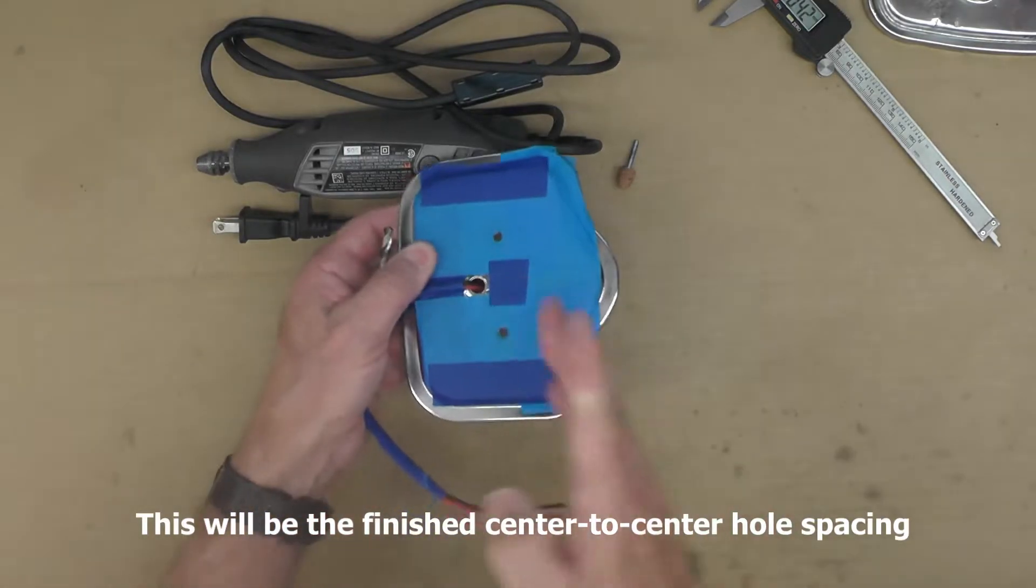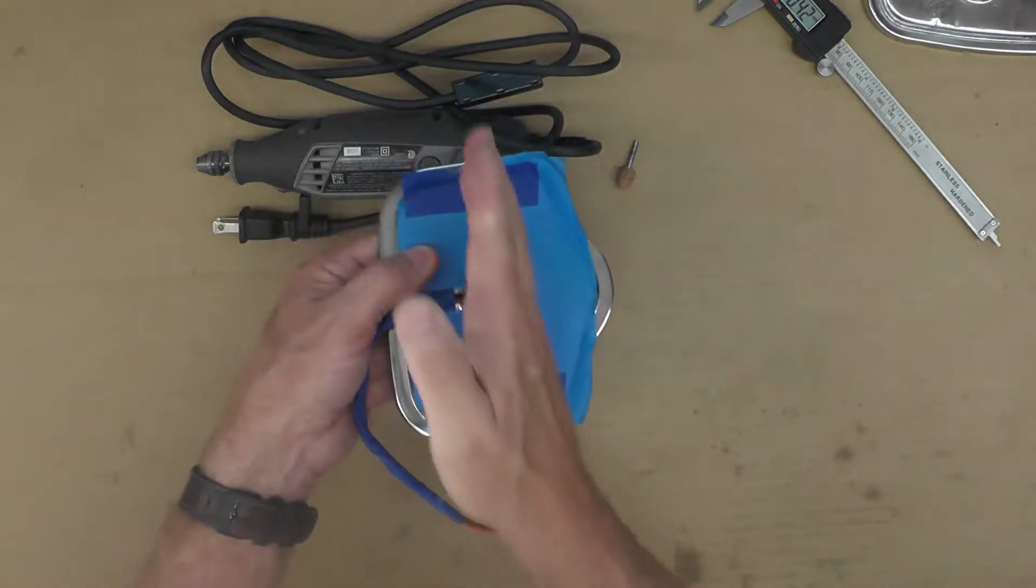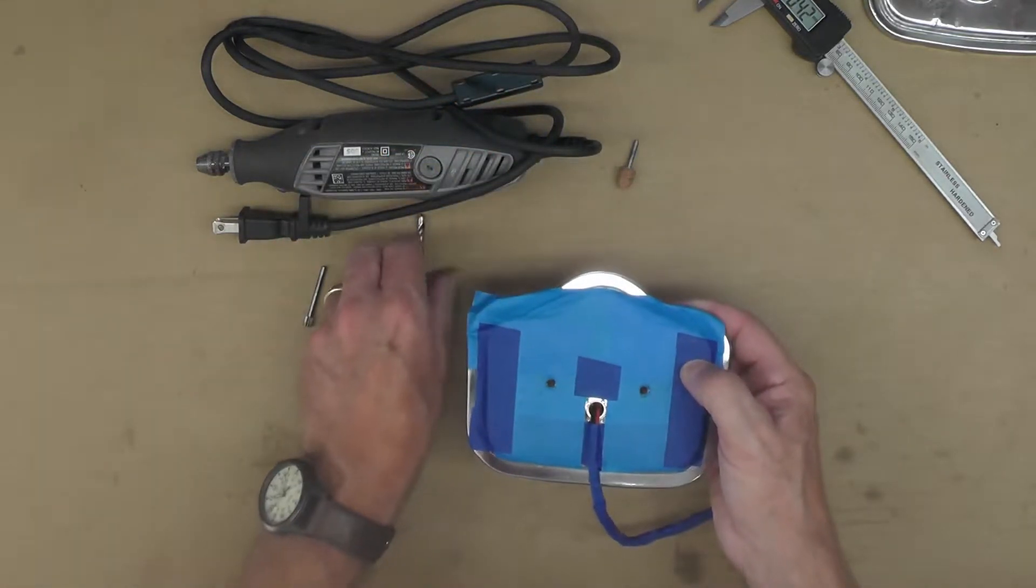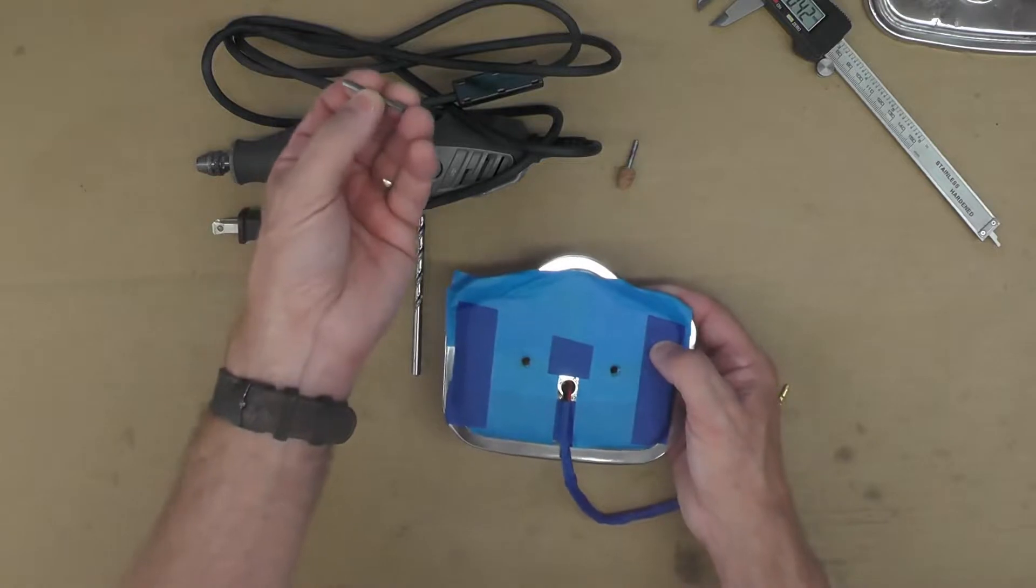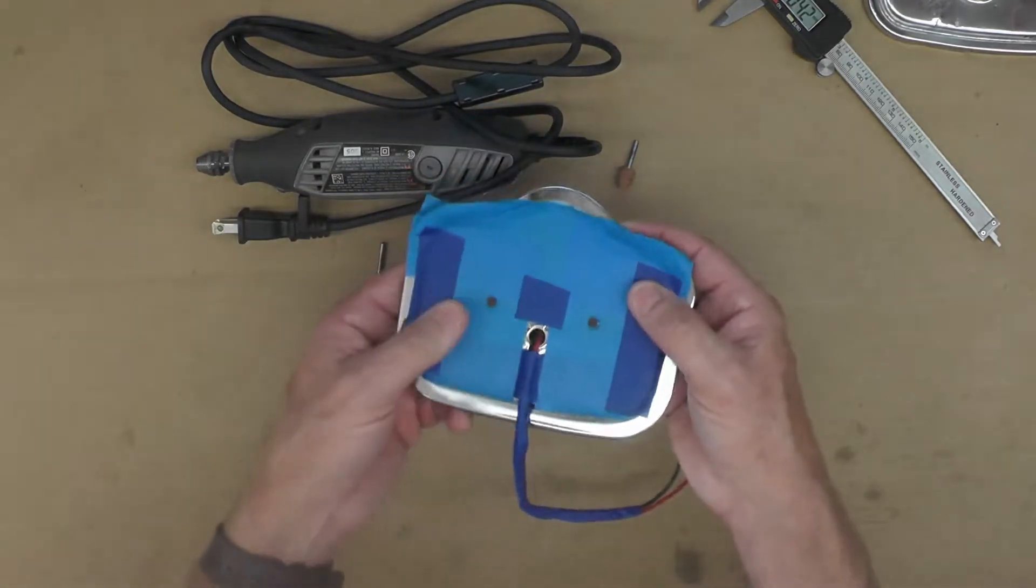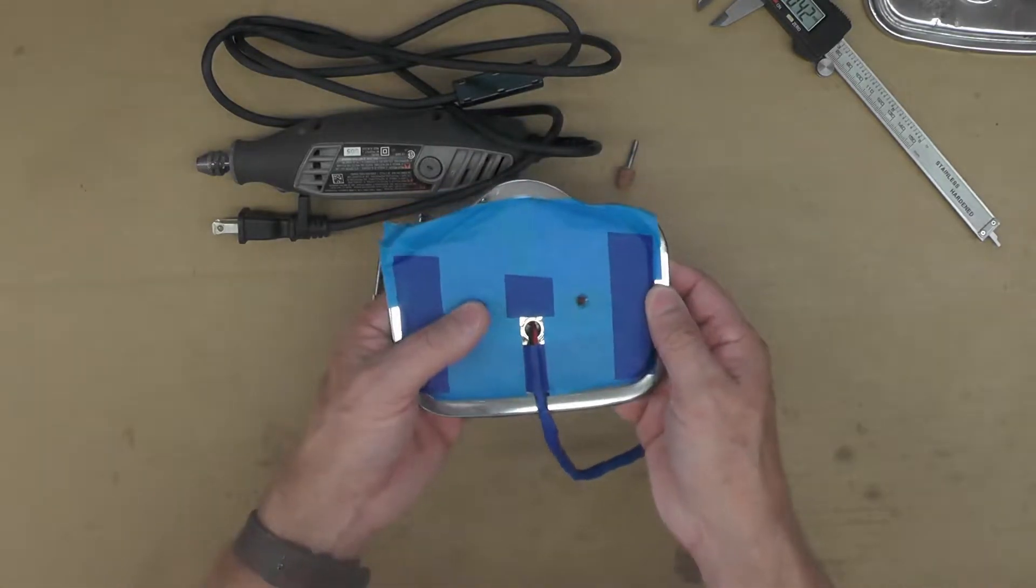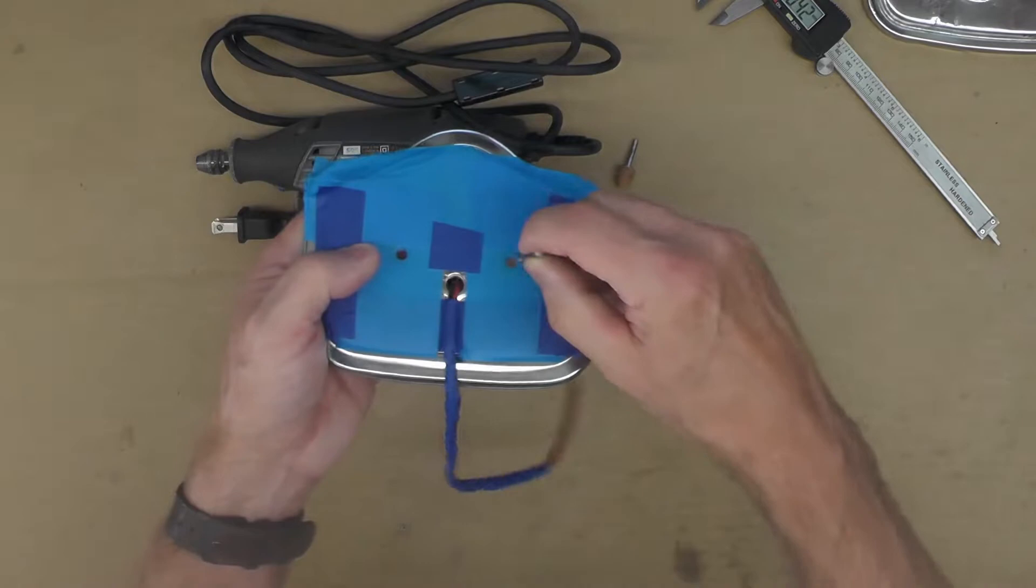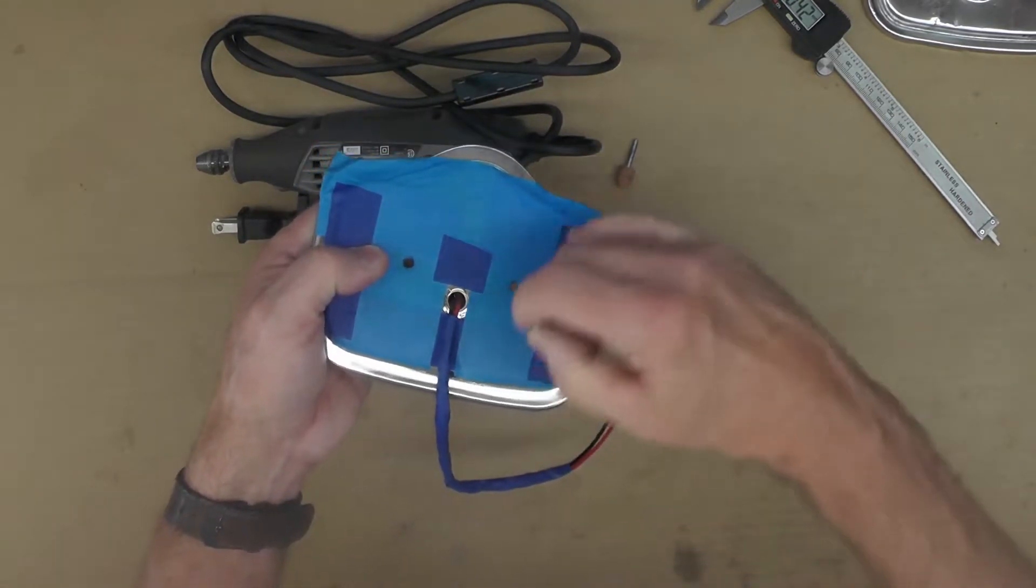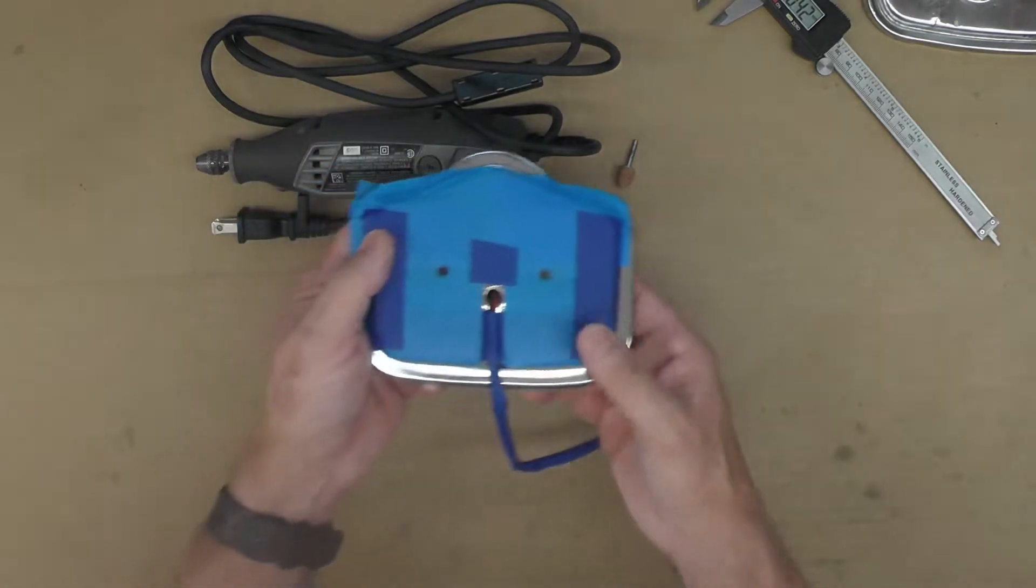And I will scribe like this and like this. That will give me my outbound distance here. Then I will eyeball the center here just for general purposes when I'm using the Dremel with the milling bit. That will give me my general approach.